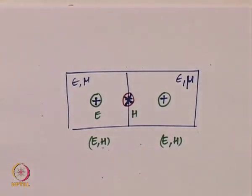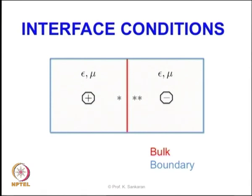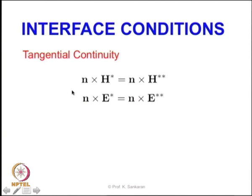The first interface condition we look into is the tangential continuity of fields. Assuming two cells with the same permittivity and permeability, the tangential components of E and H are continuous across the interface — the left-hand side and the right-hand side are the same. This is the first bulk interface condition.